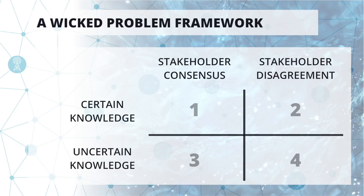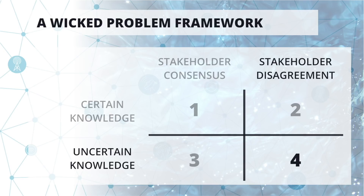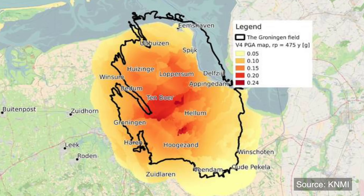The most wicked problem is when the stakeholders dealing with the problem are not agreeing with each other — there is competition or conflict — and we also don't know enough about the problem, so there is a lack of knowledge. As an example, in the fourth quadrant, man-induced earthquakes like those in the Netherlands resulting from mining: although people know a lot about earthquakes, they are impossible to predict and they create governance crises where people do not agree with each other.